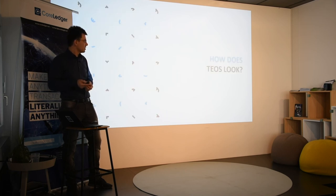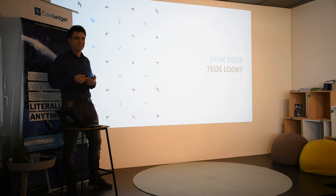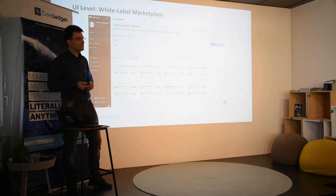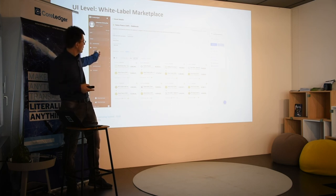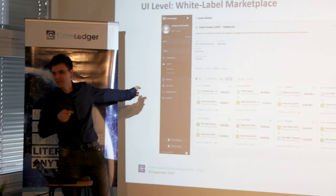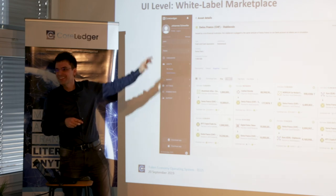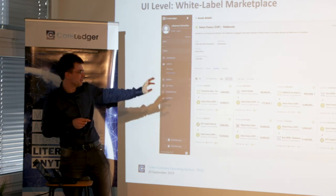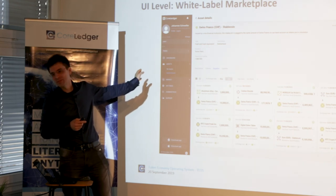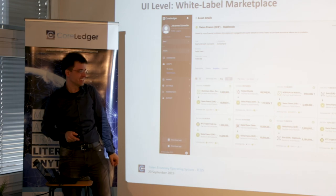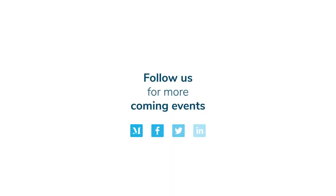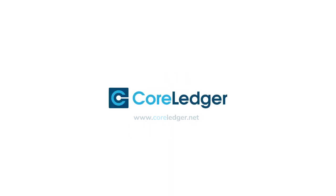How does TEOS look? How does the white-labeled marketplace look? I can show you the code, but you're not interested in code. What I can show you is the white-labeled marketplace itself, and I'll demonstrate it live if you're interested. It's a UI which has an overview — nice colors, blobs, and rectangles. It allows you to tokenize, trade, and that's it. I'll show you in a live demo.